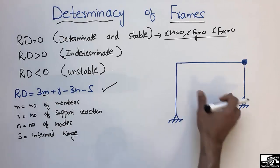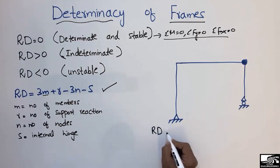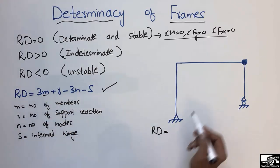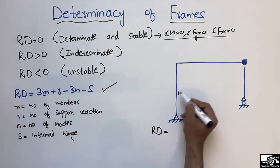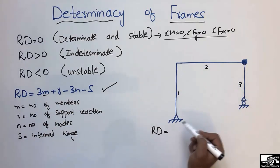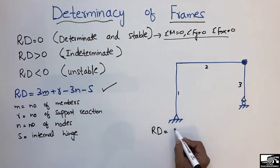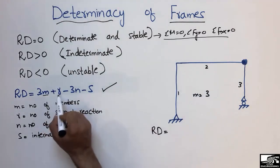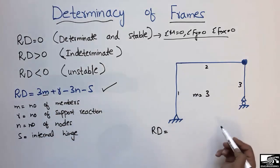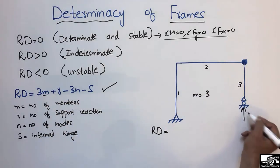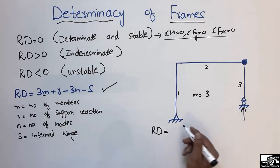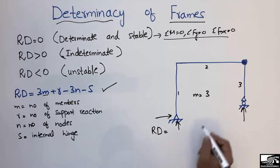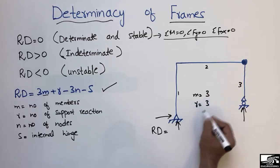Now let's consider the first example to find its Rd value. The number of members m: counting one, two, three — so m equals three. The number of support reactions r: there is a roller support which resists only vertical force, giving one reaction, and a hinge support which resists vertical and horizontal forces, giving two reactions — so r equals three.